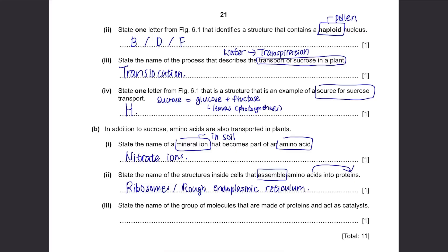State the name of the group of molecules that are made of proteins and act as catalysts. A bit of a hint, this is a biology paper so think of biological catalysts. They are enzymes and yeah, they are made of proteins.